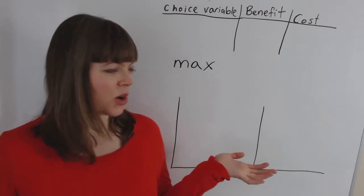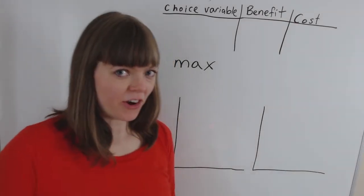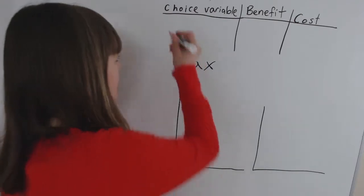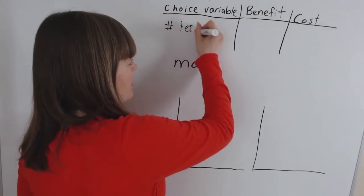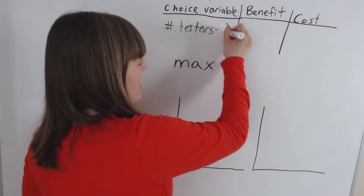So how does this work? What is our choice variable going to be? Well in this case we're deciding the number of people to test our product on. Number of testers. We'll call that T.